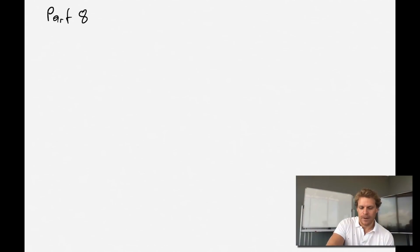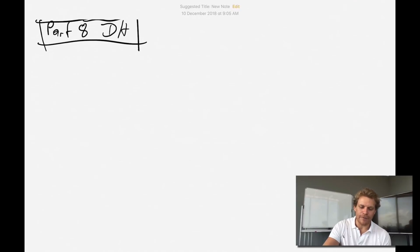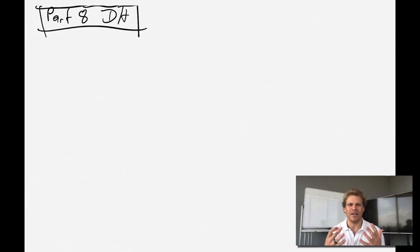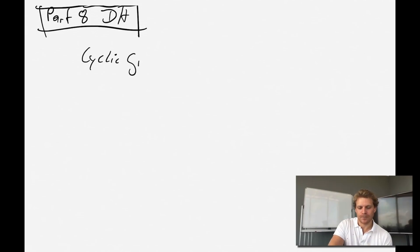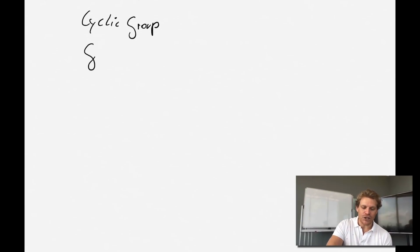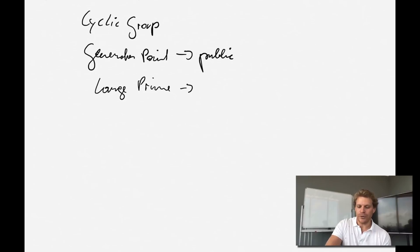We are on part 8, talking about Diffie-Hellman. Diffie-Hellman is actually the first asymmetric cryptography. It's based on what's called discrete logarithms. It's very simple: we have a cyclic group, a generator point that is public, and a large prime that we use as the modulus, which is also public.